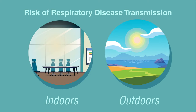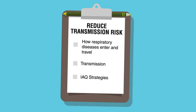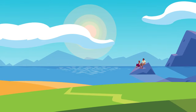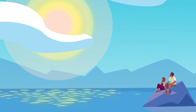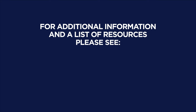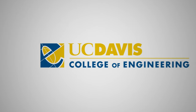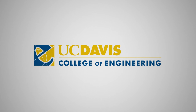Overall, the risk of respiratory disease transmission is much higher indoors than outdoors, as smaller, enclosed spaces allow for more buildup of disease-carrying particles. By understanding the basics of how respiratory diseases enter and travel through the air, the factors that affect transmission from one person to another, and strategies that can improve indoor air quality, we can reduce the risk of transmission in our indoor spaces and keep more people healthy.